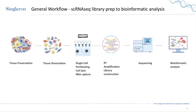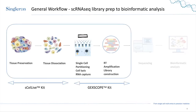First, I want to introduce our general workflow. If you have intact tissue or already dissociated tissue as a single cell suspension, our JackScope CellLife kit will allow you to go from tissue to single cell suspension, then to RNA capture and RT reactions, cDNA amplification, and a sequencing-ready library, and finally to sequencing and bioinformatic analysis. Today I'm going to focus on the first part — using the CellLife kit to dissociate and preserve tissue into single cell suspension.